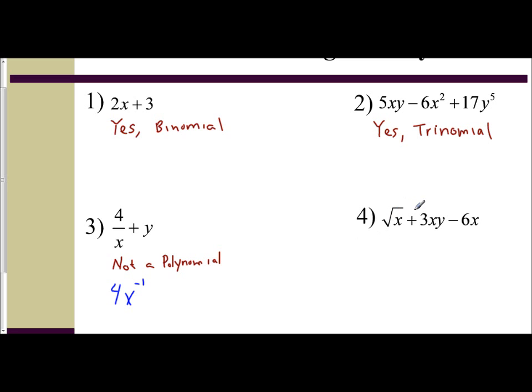And so we have square root of x plus 3xy minus 6x for the next example. And since I'm taking the square root of it, that ruins the idea of it being a polynomial.